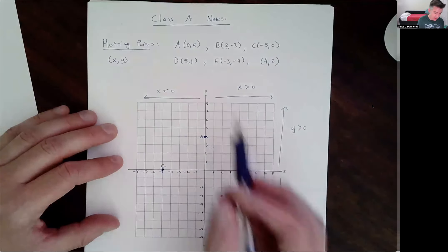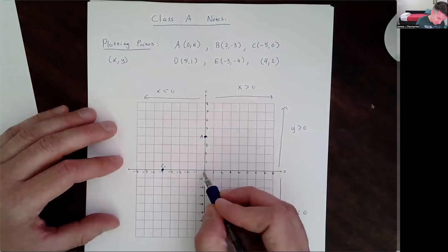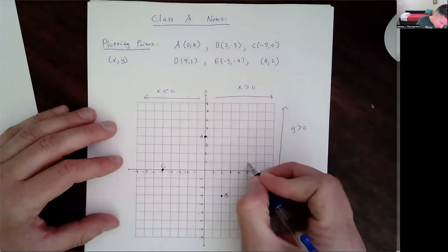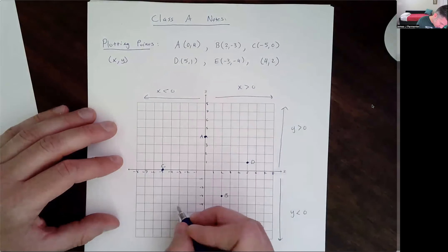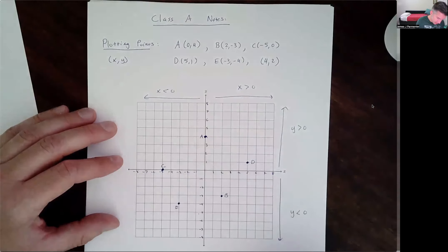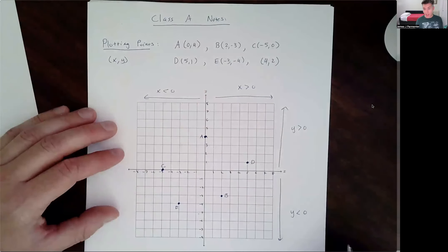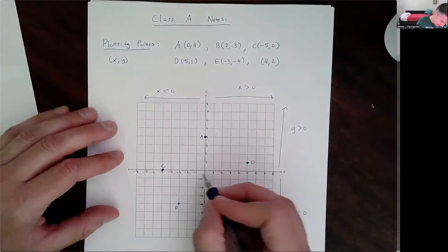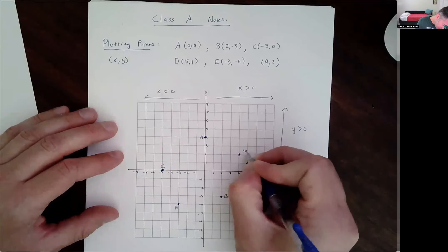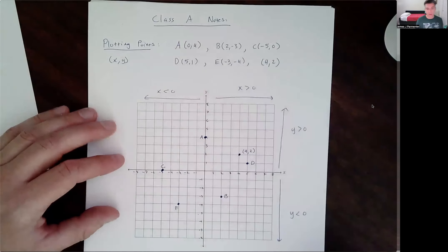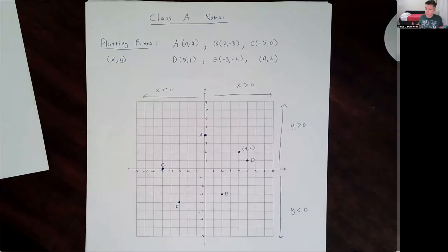Let's continue on. We've got point D, which is (5, 1) — going 5 to the right, 1 up. For point E, I'm going to go negative 3, negative 4 — so 3 left and 4 down. And for the last point, (4, 2) — I could call it F if I wanted, or I could just find it: 4 right, 2 up. And then I could label it with the coordinates (4, 2). There's not a whole lot more to plotting points — you're really just going some amount left or right, some amount up or down.